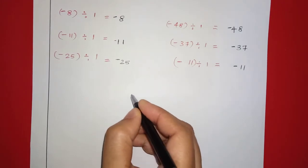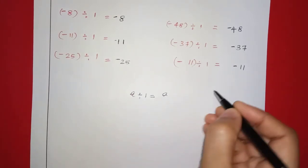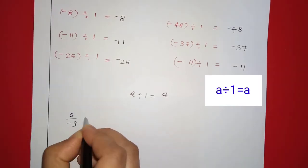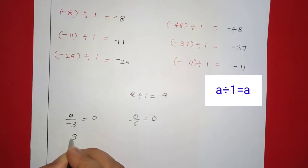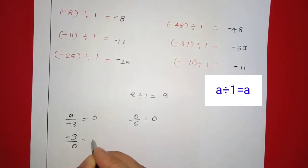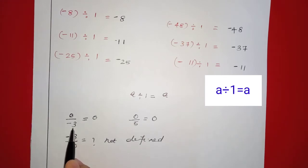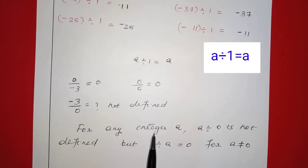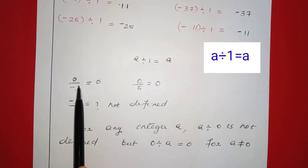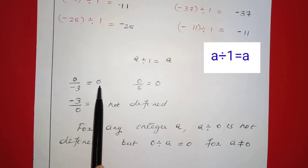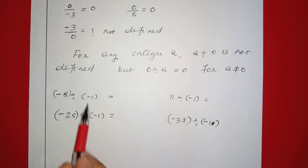For all integers a: if a is not zero, a divided by 0 is not defined. But 0 divided by a equals 0. We need to say that for any integer a, a division 0 is not defined, but 0 division a is equal to 0. Division with negative 1 or 1 follows accordingly.